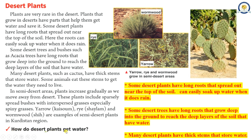How do desert plants get water? Some desert plants have long roots that spread out near the top of the soil and can easily soak up water when it does rain. Some desert trees have long roots that grow deep into the ground to reach the deep layers of soil that have water. Many desert plants have thick stems that store water.